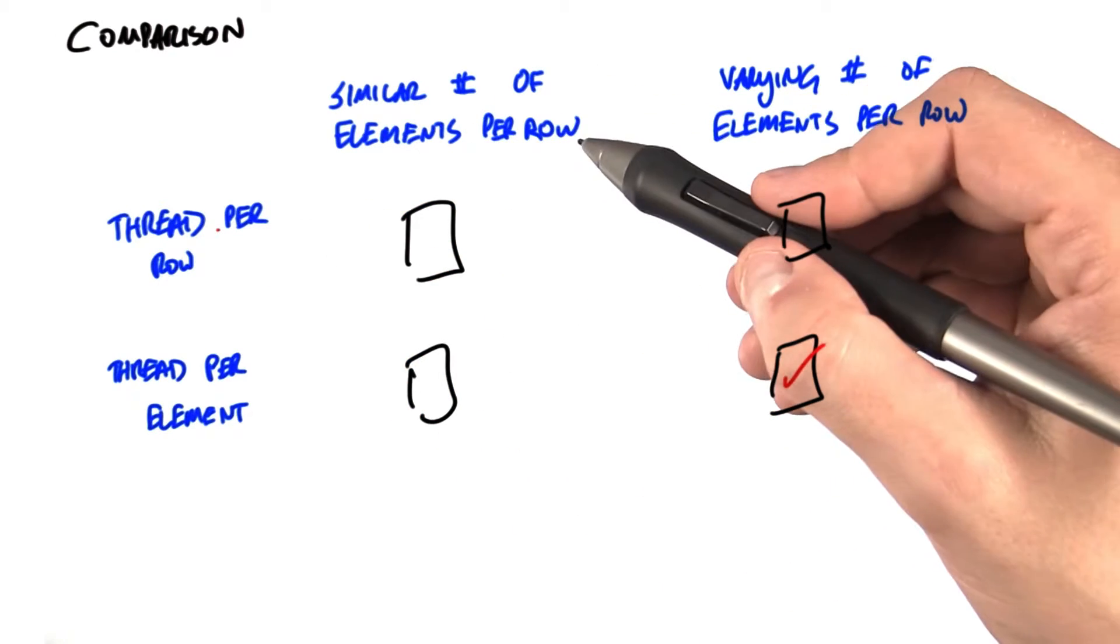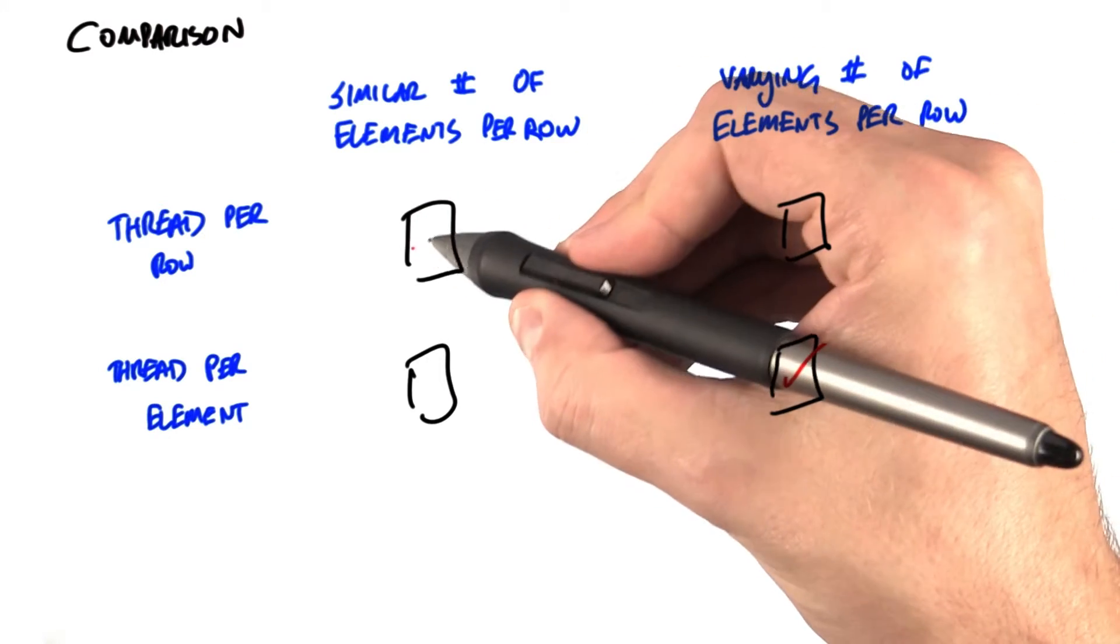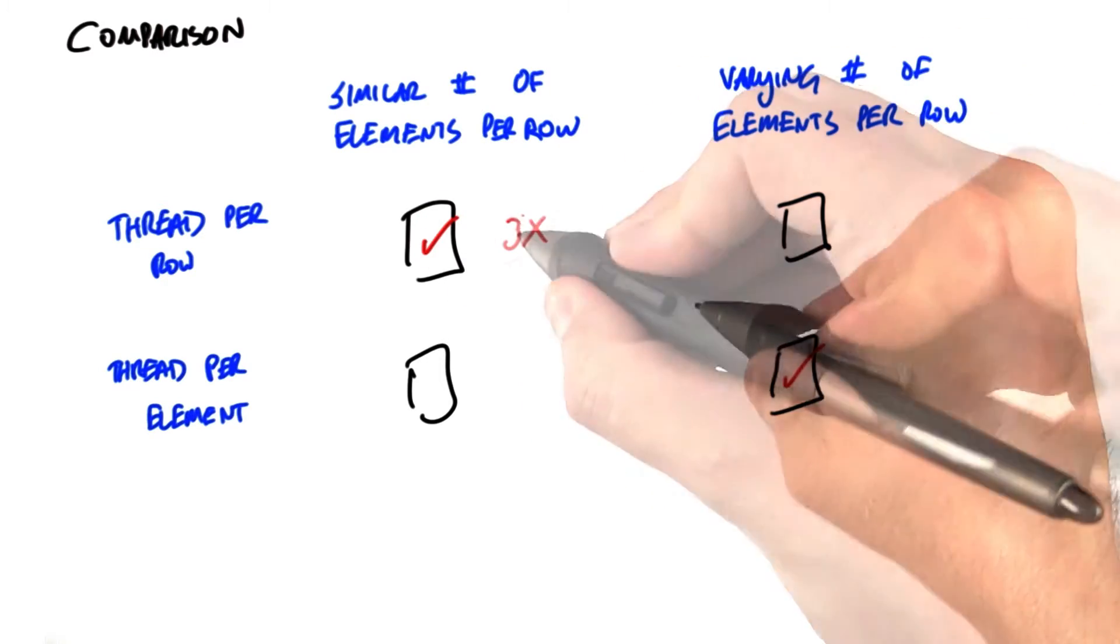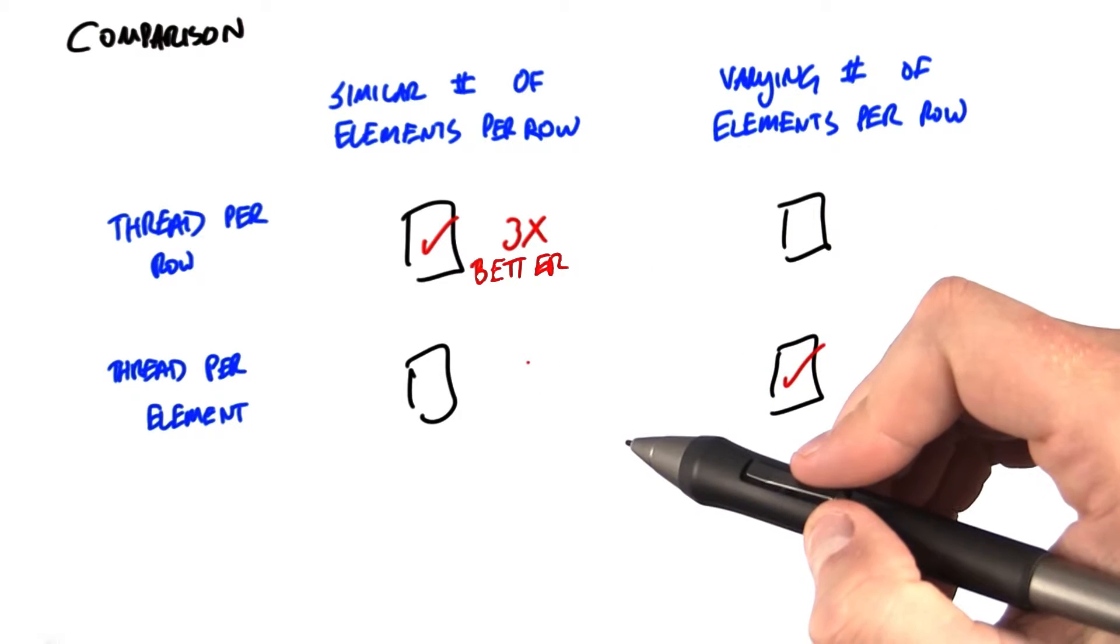And in this case, where we have a similar number of elements per row, it turns out that thread per row is roughly three times faster than thread per element.